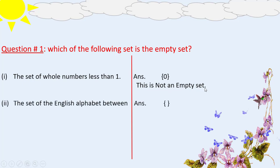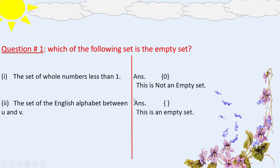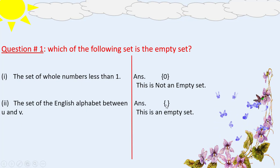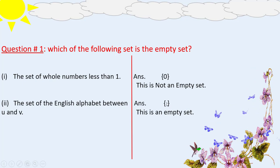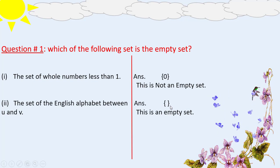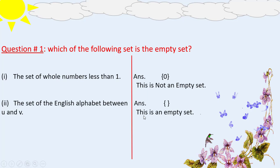The second part is the set of English alphabets between U and V. As you know, there is no alphabet between U and V, so we are not able to write a single element of this set. Therefore, this is an empty set.